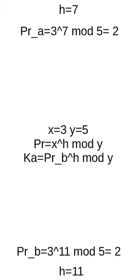For person B, that is 3 on the power of 11 modulo 5, once again 2. They are going to exchange these two public results with one another.